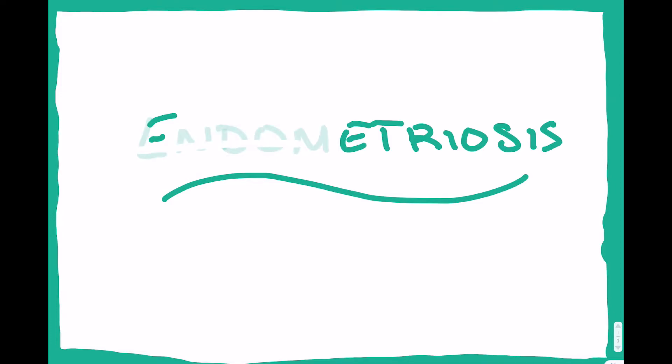In this video we're going to talk about endometriosis. Specifically we're going to talk about the pathogenesis, pathophysiology, and signs and symptoms associated with endometriosis. Endometriosis is defined as the presence of glands or stroma of the endometrium outside of the uterus. This means that the endometrium, the typical innermost layer of the uterus, can be found elsewhere.